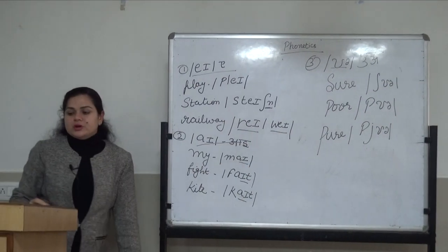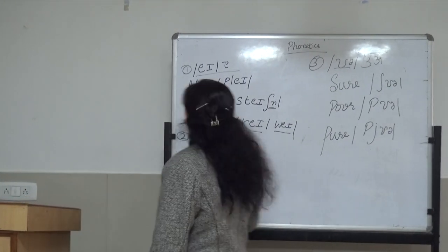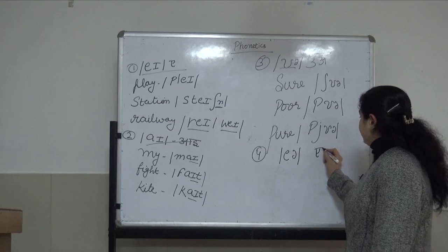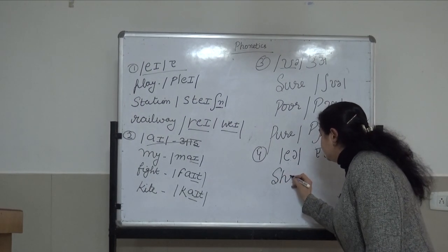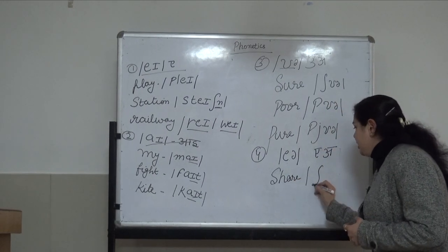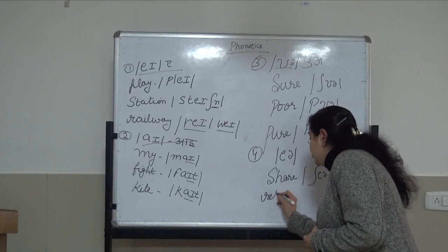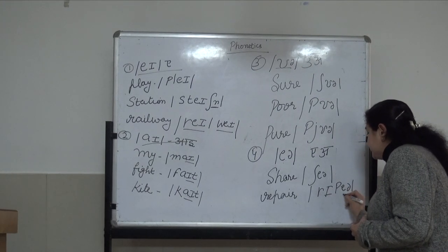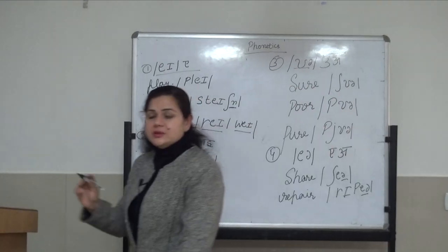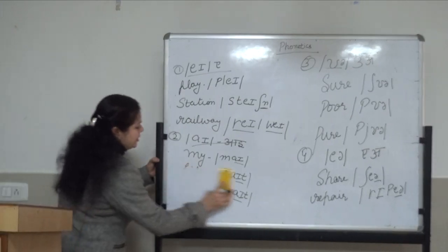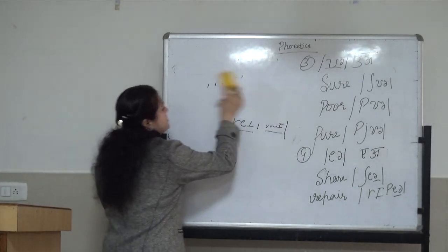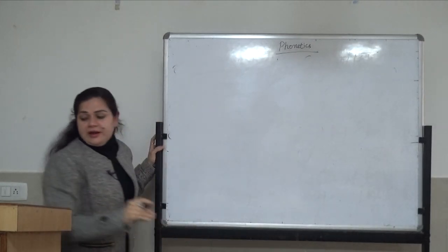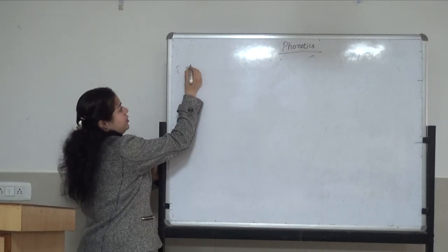The fourth symbol is /eə/ — the 'air' sound. For example 'share': /ʃeə/. 'Repair': /rɪpeə/. This is the symbol of /eə/. Now we are left with only four symbols of diphthong. The fifth one is /ɪə/ — the 'fear' sound.